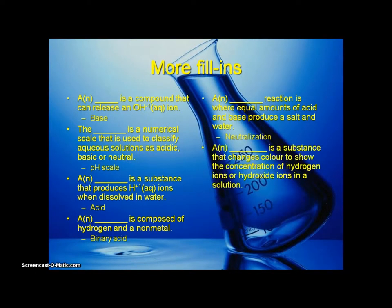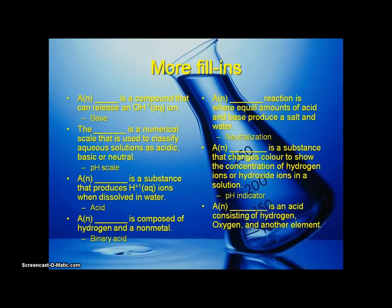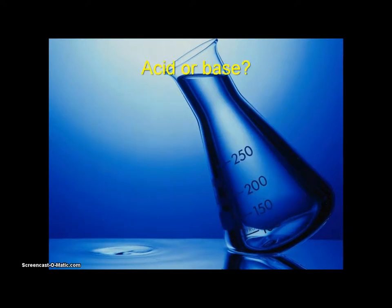A substance that changes color to show the concentration of hydrogen ions or hydroxide ions in a solution is a pH indicator. An acid consisting of hydrogen, oxygen, and another element is an oxo acid.